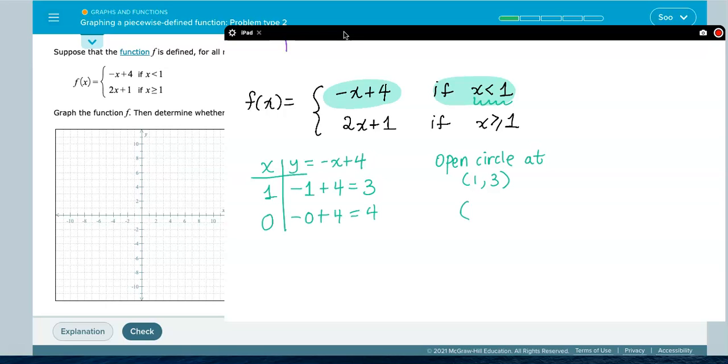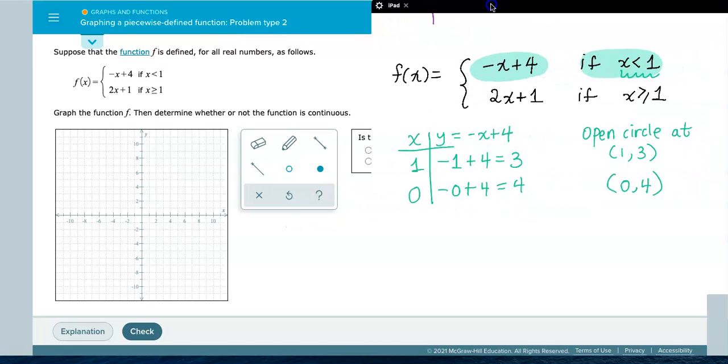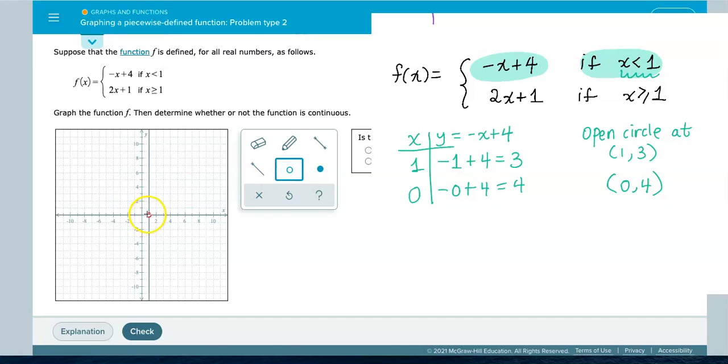Let me do that piece first, and then we'll come back and do the bottom piece together. So open circle at 1, 3, and then I will use this tool to start at 1, 3, and then I will tell my graph to go to 0, 4. That's looking good. Let's go to the second equation.